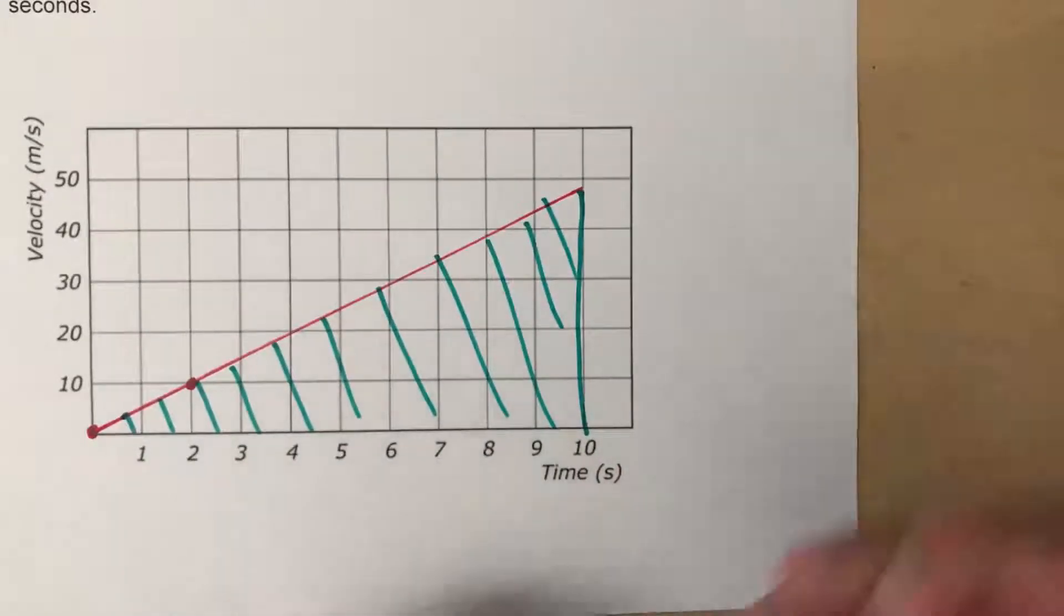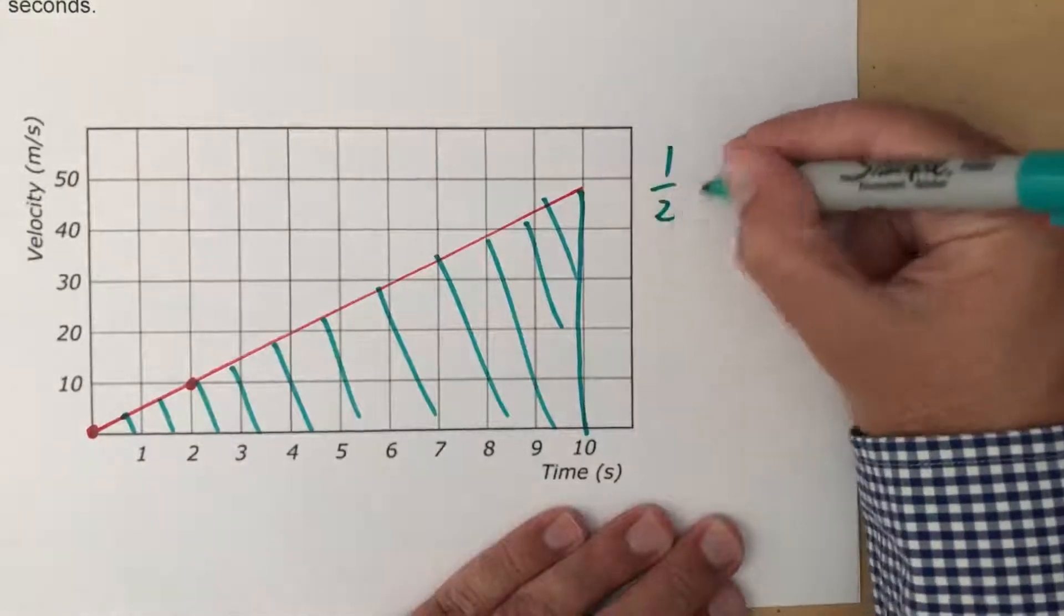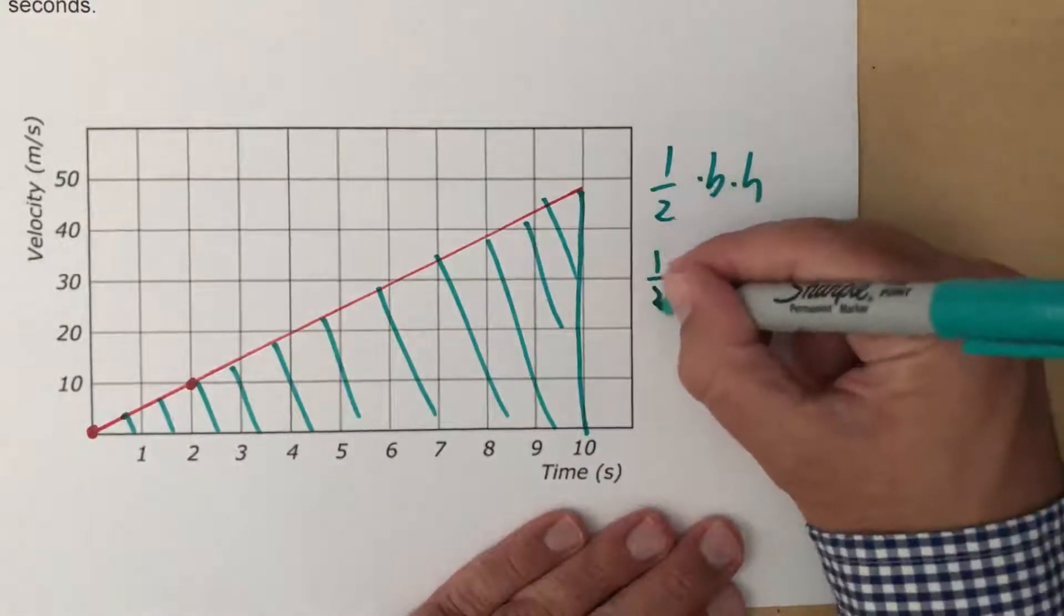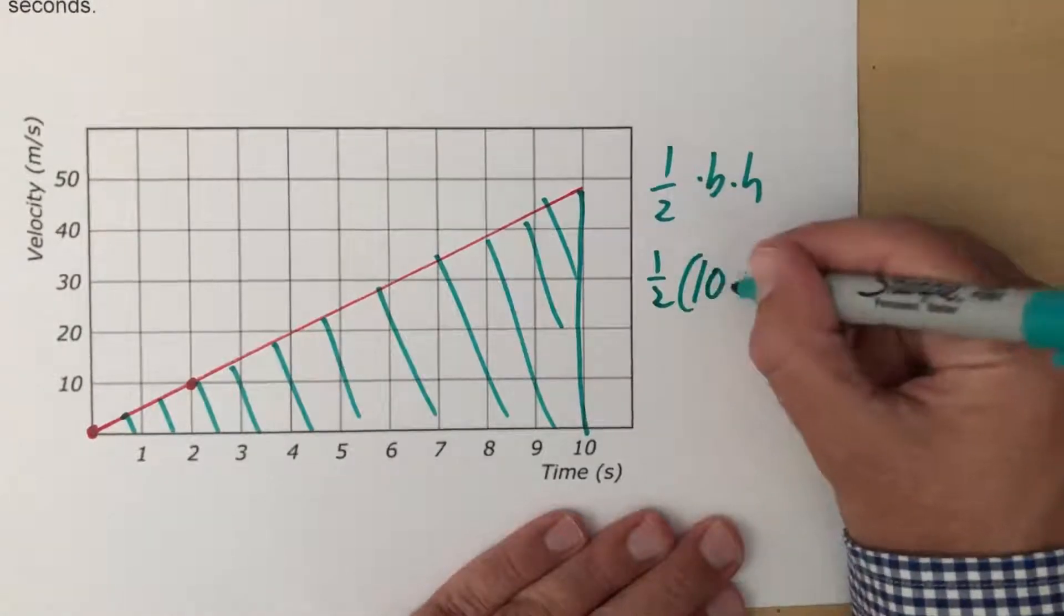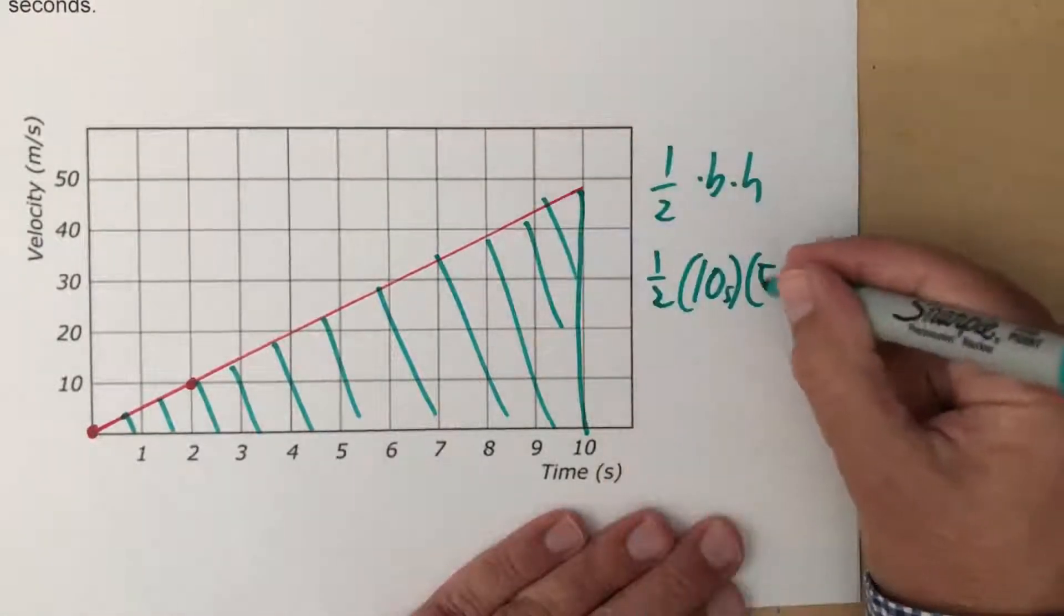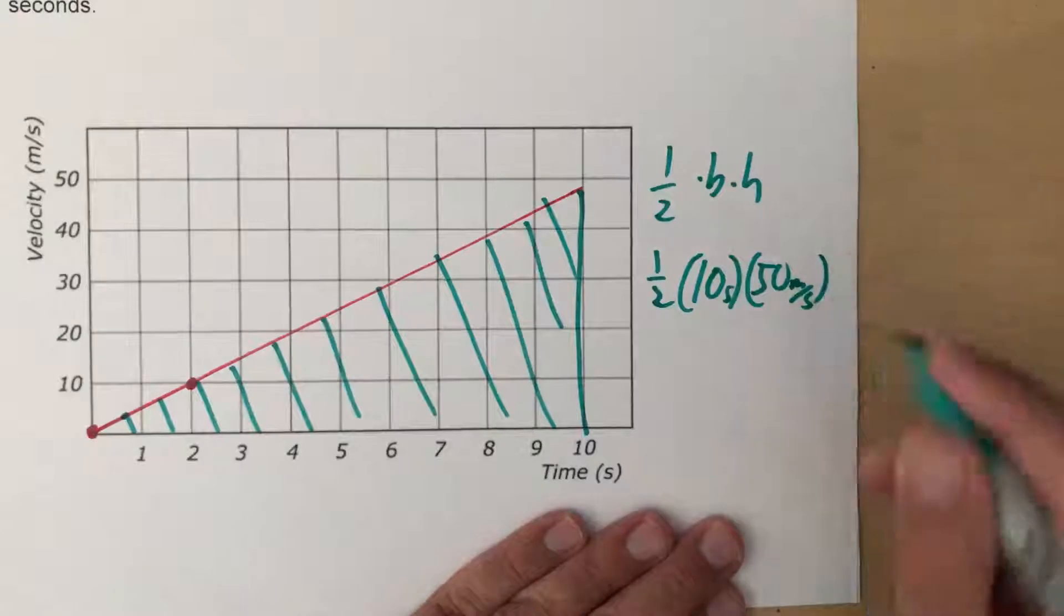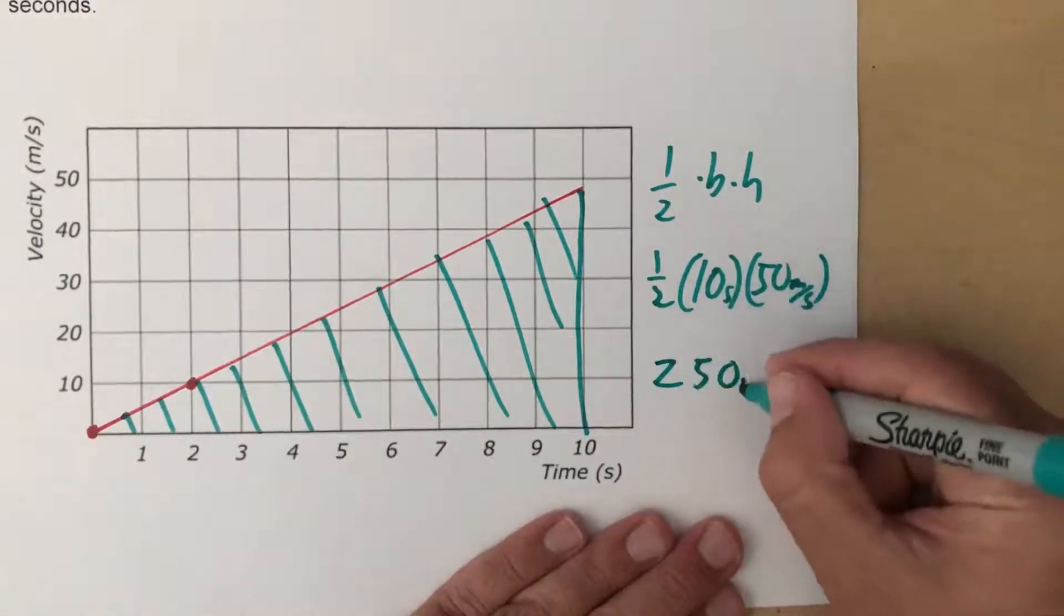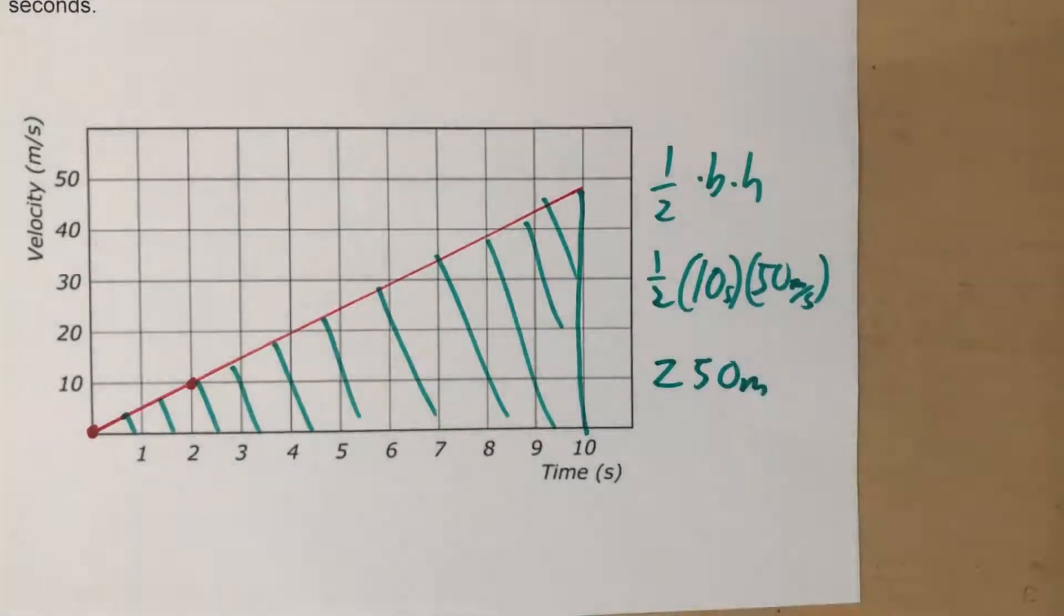This is one way to do it. They do tell you to do it from the graph. One half base times height is the area of the triangle. So that's one half. The base is 10 seconds. The height is 50 meters per second. 10 times 50 is 500. Half of that is 250 meters, which is the answer to that part.